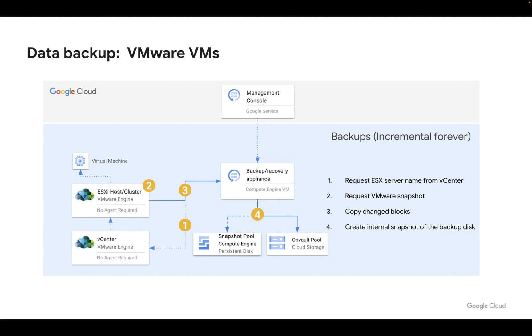We then request a VMware snapshot be created, and then copy the change blocks from the snapshot. Clearly, the first time we do a backup it will be a full. After that, it will be incremental.